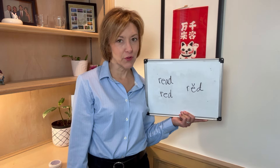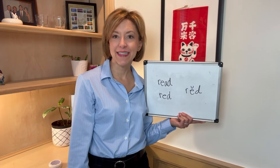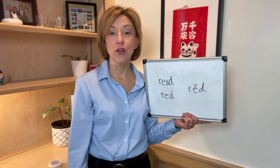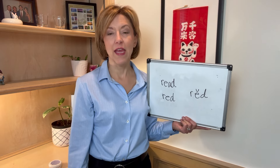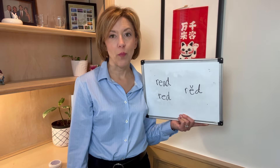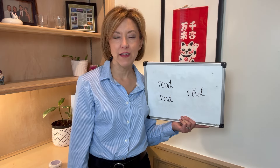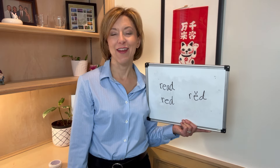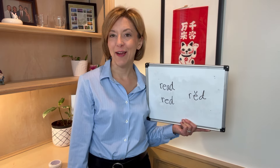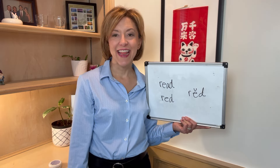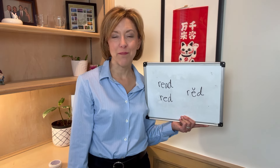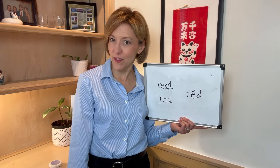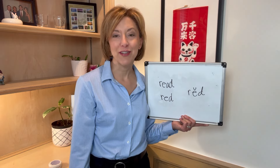Next we're going to move to that short E sound. To do this, your mouth is slightly open and you are going to see the tip of your tongue just peeking out between your top and your bottom teeth. Then touch the tip of the tongue to the back of the top front teeth, specifically where your teeth and the skin meet on the roof of your mouth.